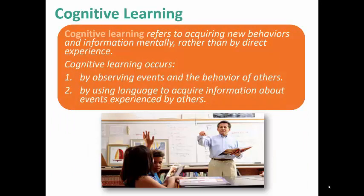Cognitive learning refers to acquiring new behaviors and information mentally rather than by direct experience. It occurs by observing events and behavior of other people and by using language to acquire information about events experienced by others. So what you're doing right now by listening to me is cognitive learning — you're learning about different constructs by listening and observing.